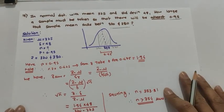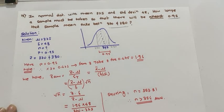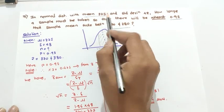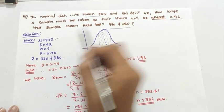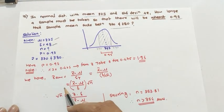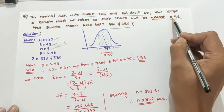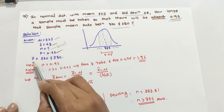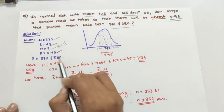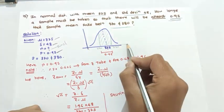First, write down what is given. Mean mu is 375, standard deviation delta is 48, sample size n is to be found. Probability P is given as 0.95, and sample mean x-bar should lie between 370 and 380.